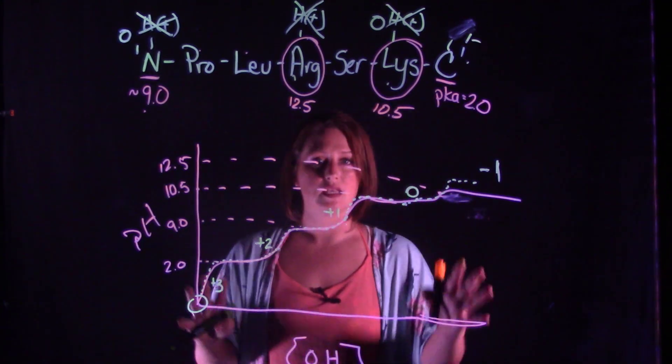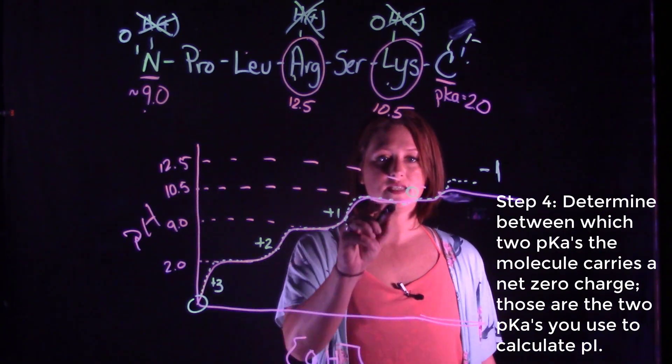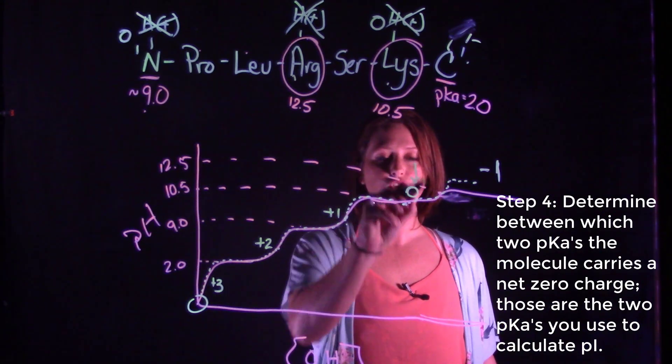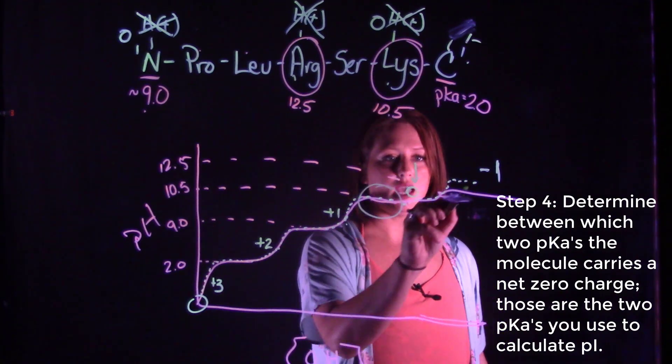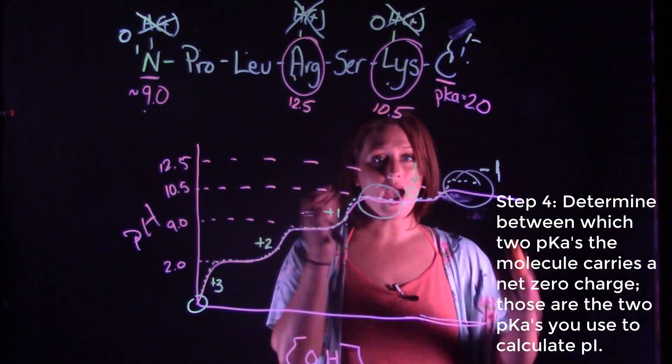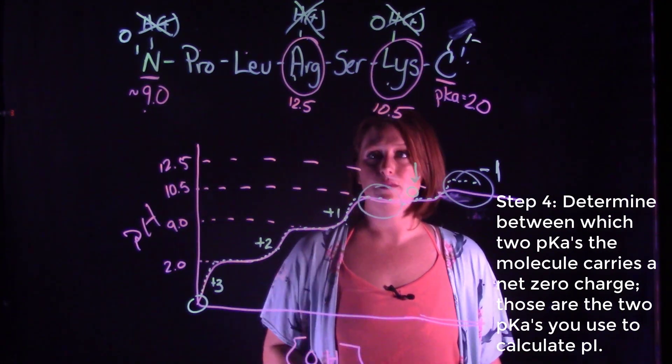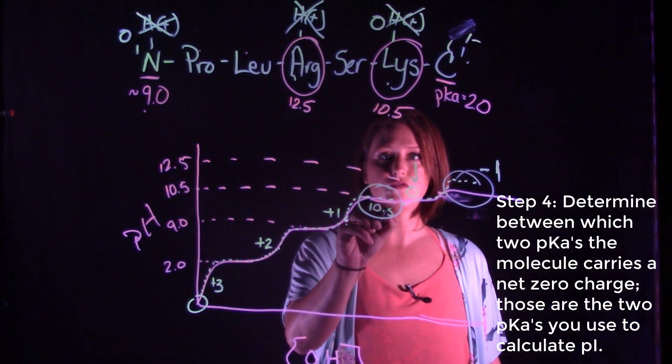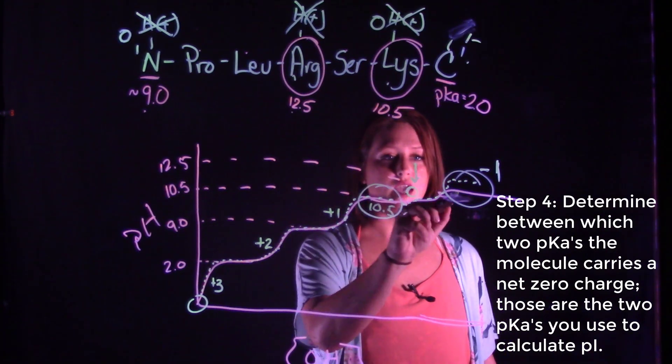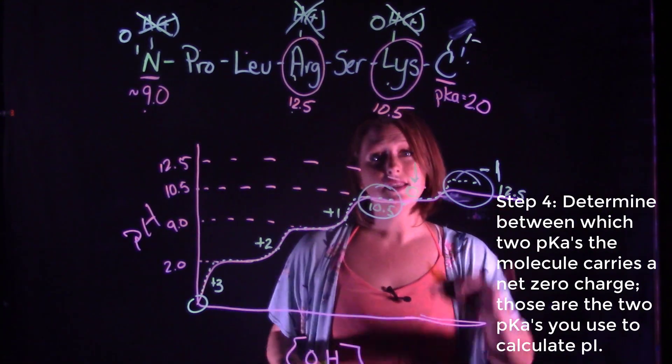Now step four is to take a step back and look at your titration curve and identify where that zero charge occurs and identify the two pKa's that bracket either side of that zero charge. So in our example, that's going to be the pKa for lysine which is 10.5 and the pKa for arginine which is 12.5. These are the two pKa's that we're going to use in our calculation for pI.